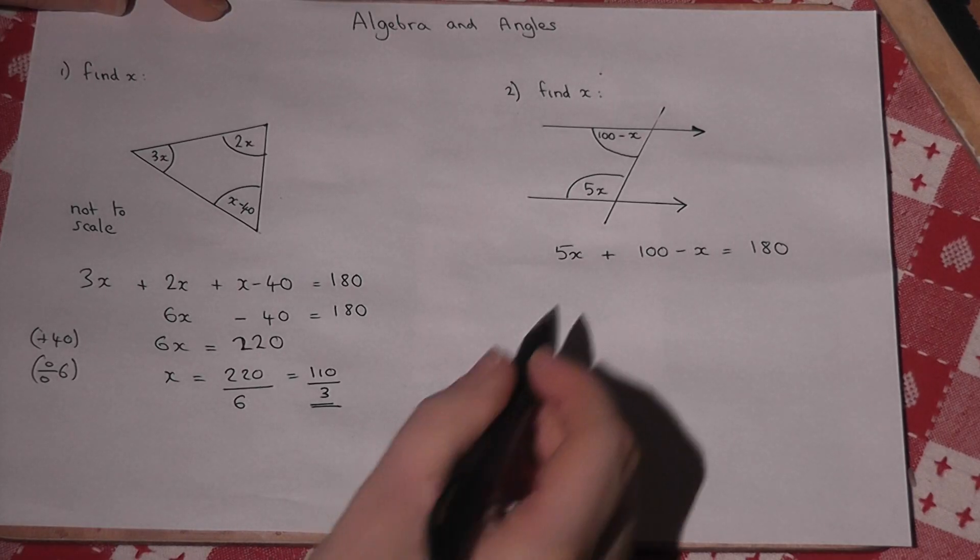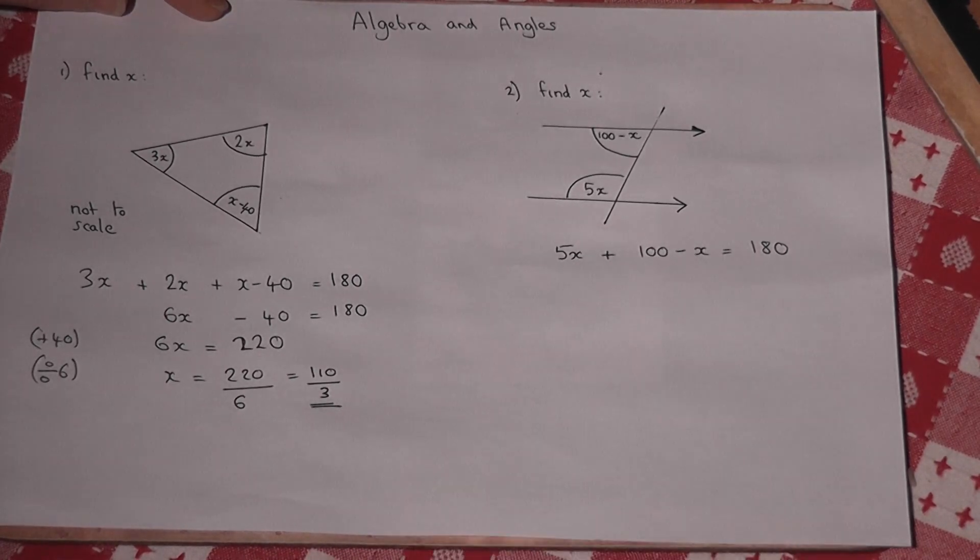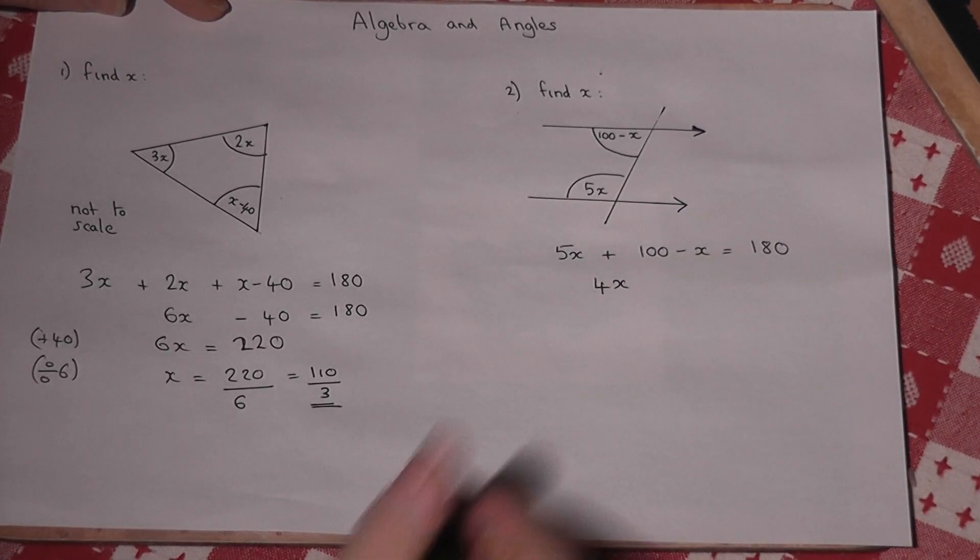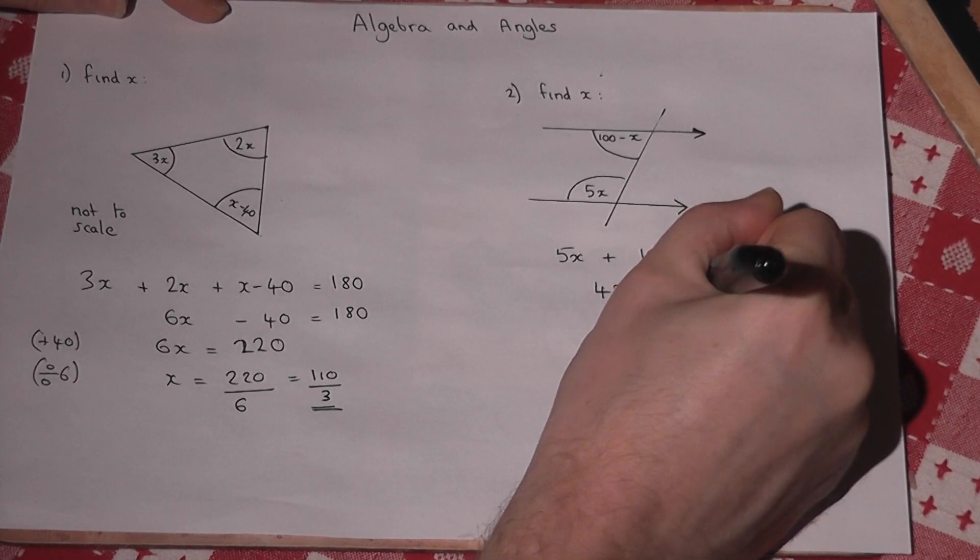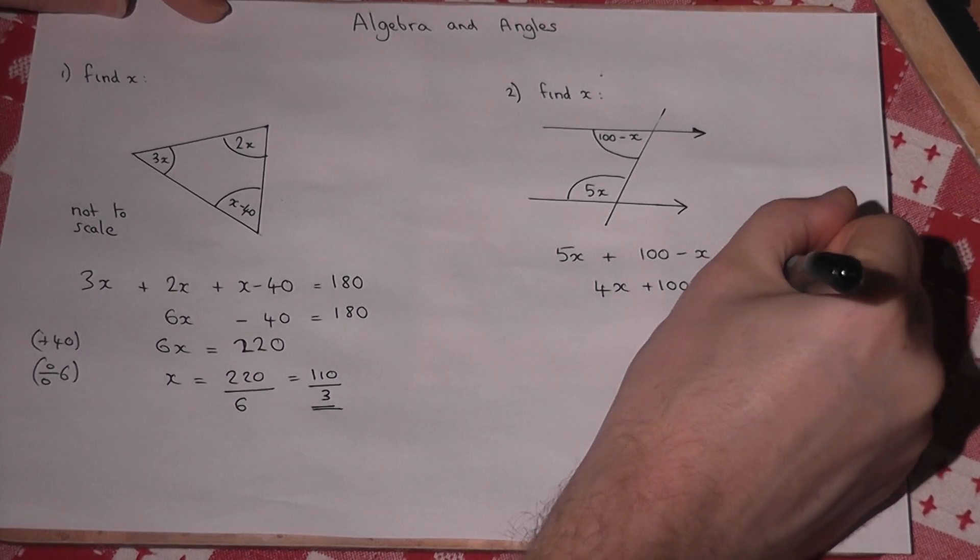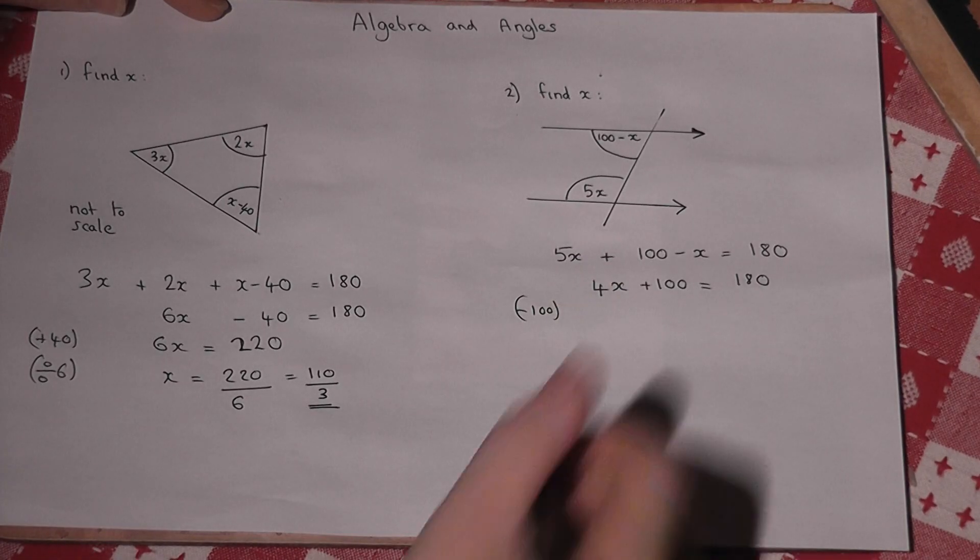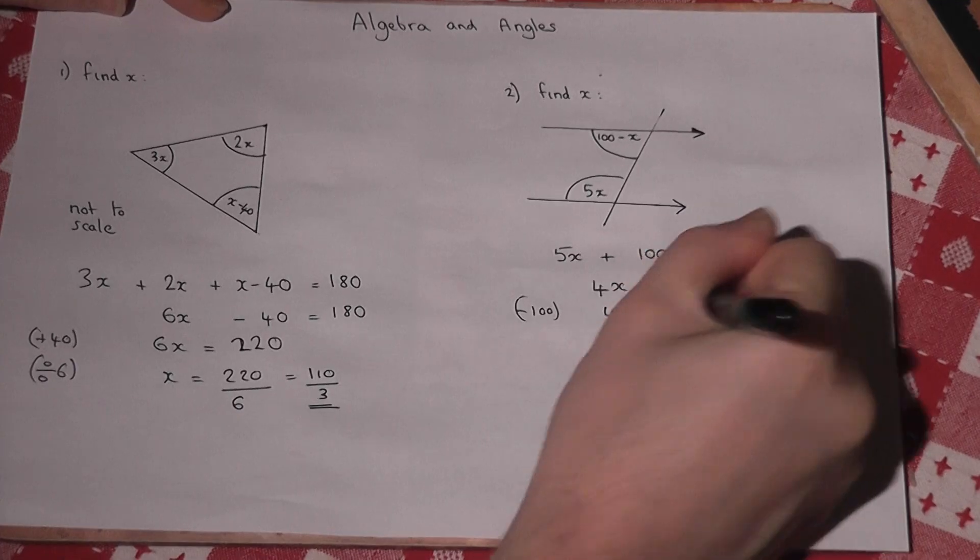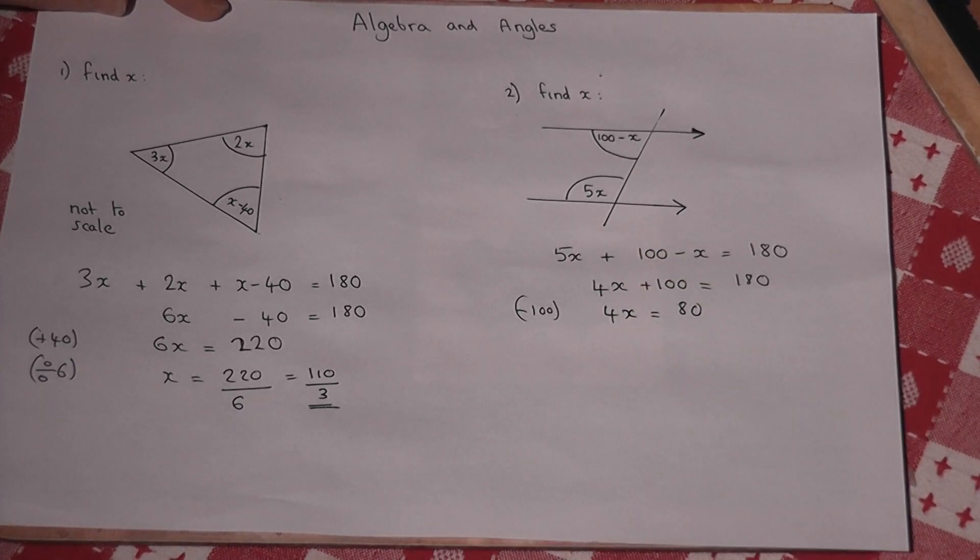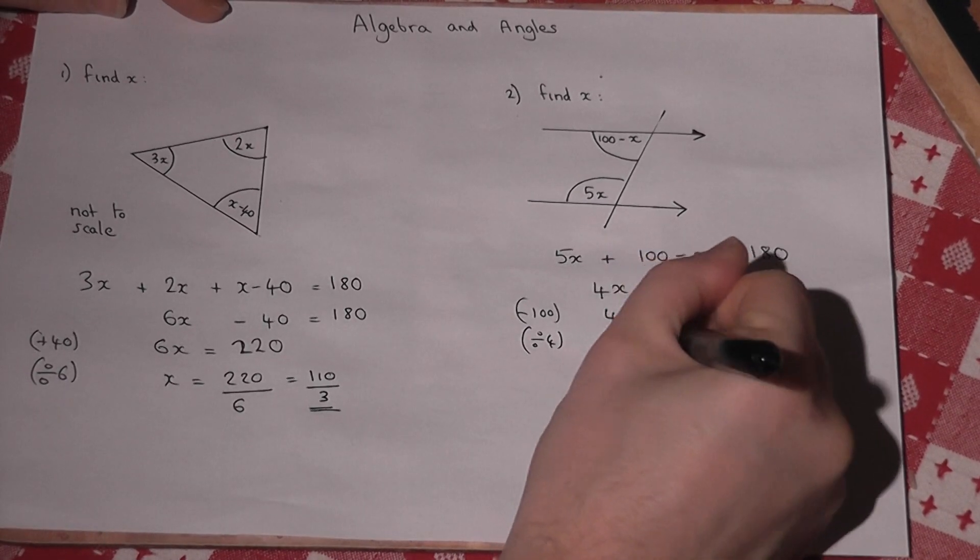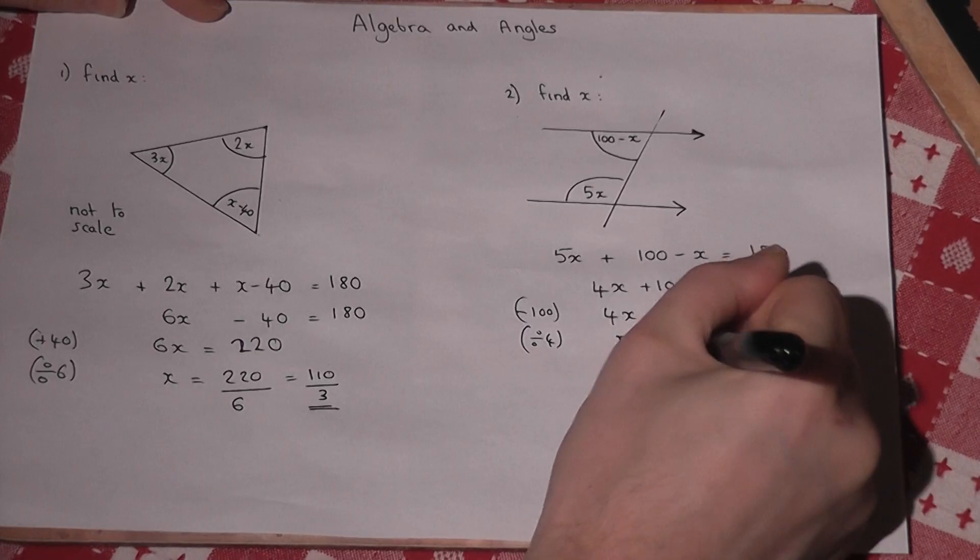This can be made simpler. 5x take away x is 4x. So 4x plus 100 must equal 180. I therefore take 100. So 4x equals 80. And then divide by 4. So x is equal to 20.